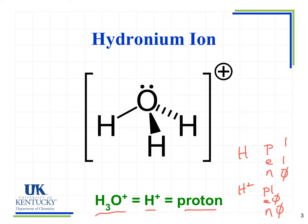In this structure I'm showing some things about the three-dimensional shape. Lines represent bonds in the plane of the screen or paper. A solid wedge means something is coming out toward you, away from the screen. A dashed line means it's going away from you, behind the screen or paper. We will see this notation, but you are not yet required to draw these molecules.